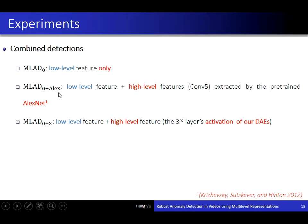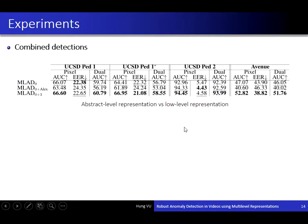MLAD-0+ uses low-level features plus high-level features learned by a pre-trained AlexNet. MLAD-0++ uses low-level features and high-level features extracted by our trained denoising autoencoders. These tables show the results of our experiments on three datasets. The combination of low-level and high-level features extracted by trained denoising autoencoders gives the best result.